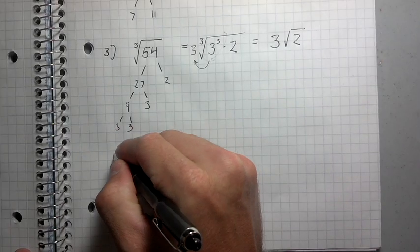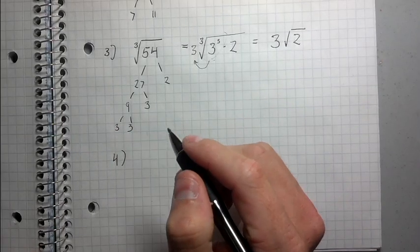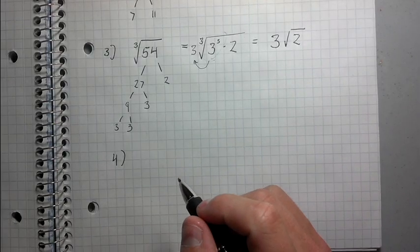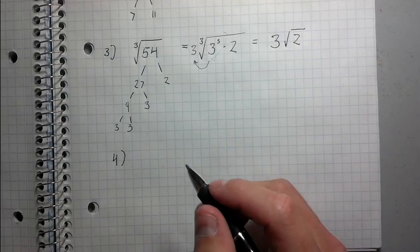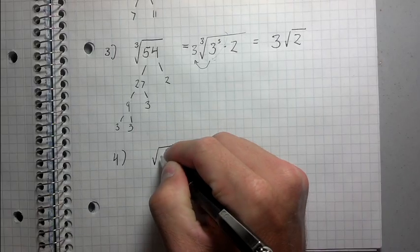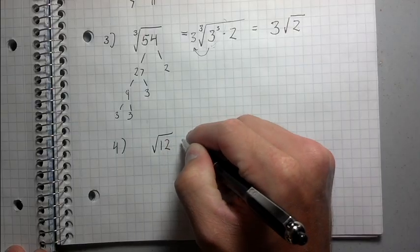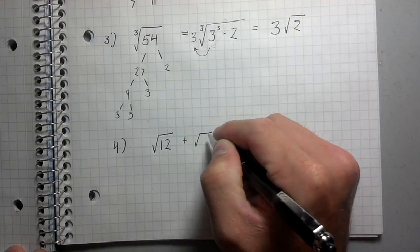So alright, the 4th example is when you want to use this idea of simplifying radicals to simplify an entire expression. So let's say I had something like this. How about root 12 plus root 75.